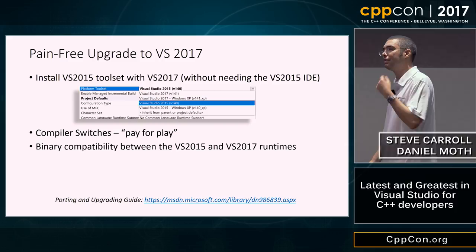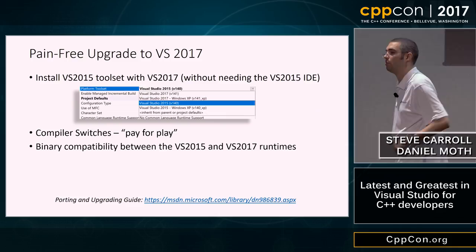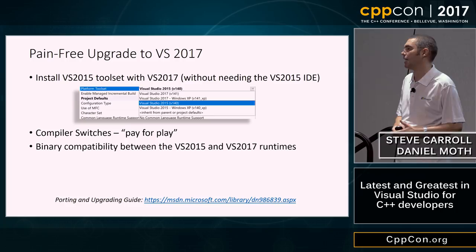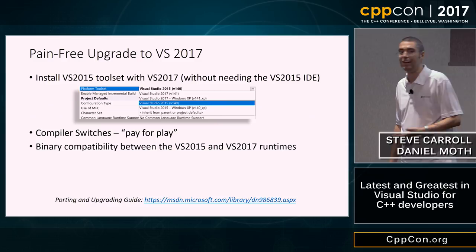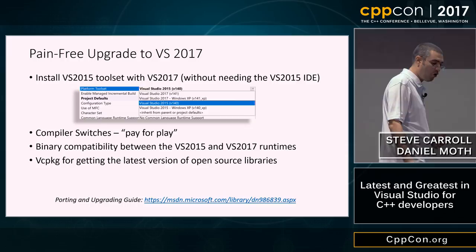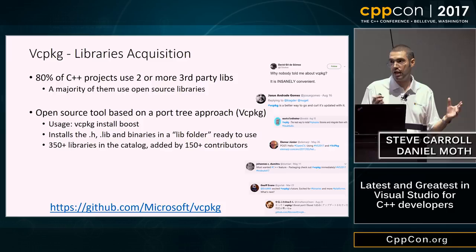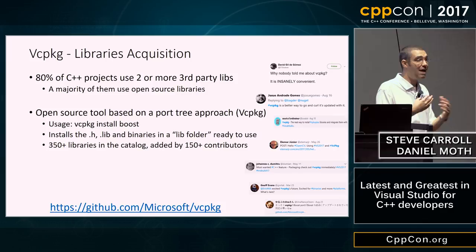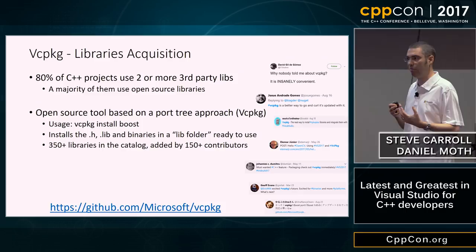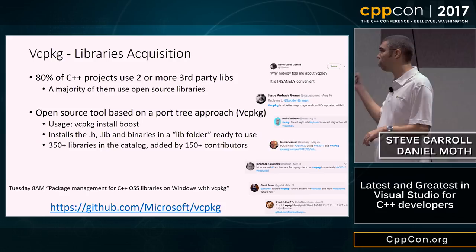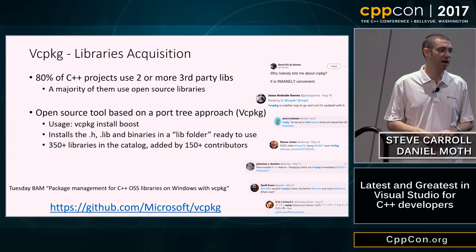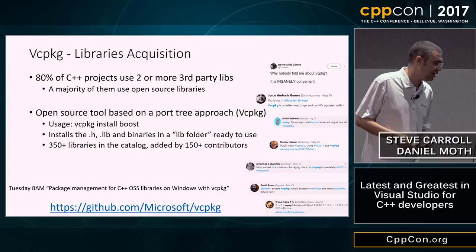For open source libraries you want to get the latest of without cleaning them up yourself, there is vcpkg. Announced last year, it's a free open-source project — a repository of open source libraries, growing every day. Go there, find the library you depend on, and it will already be built with our latest compiler. If a library isn't there, email us and we'll take care of it. To learn more, there's an open content talk tomorrow at 8am where Robert and Eric will discuss it further.